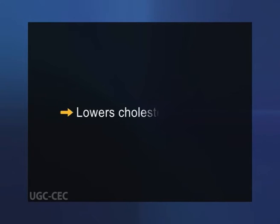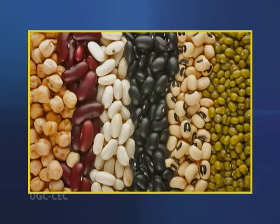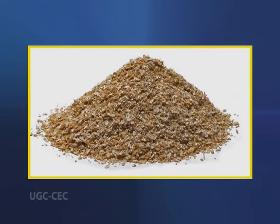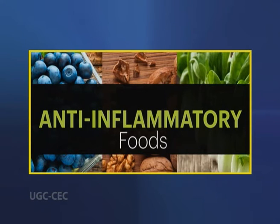Third, it lowers cholesterol levels. Soluble fibers found in beans, oats, flaxseeds and oat bran may help lower total blood cholesterol levels by lowering low-density lipoprotein, or bad cholesterol levels. Studies have also shown that high fiber foods may have other heart health benefits such as reducing blood pressure and inflammation.